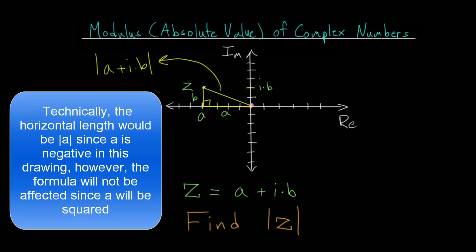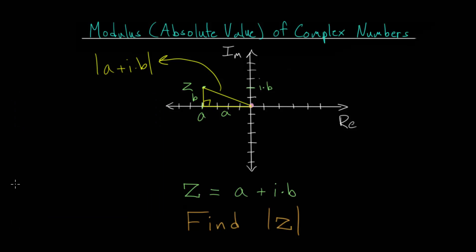We can use the Pythagorean theorem now, since remember that for a right triangle, we have a squared plus b squared is equal to c squared, where a and b are the legs of the right triangle, and c is the hypotenuse of the right triangle.